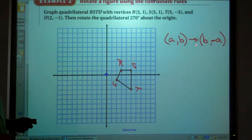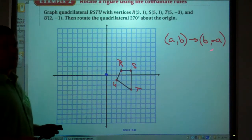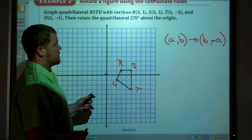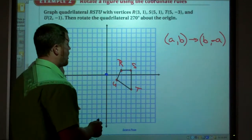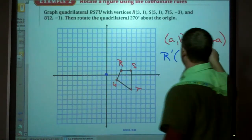The rule is any point (a, b), it's going to be b and then the opposite of a. So b here is 1. So R', applying this, if I apply this, it's going to be (1, -3).